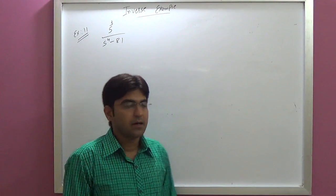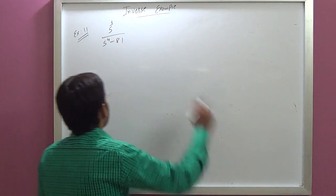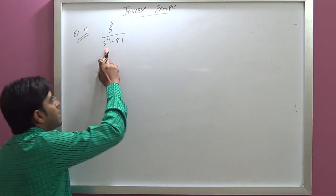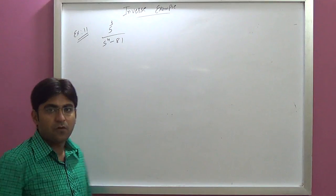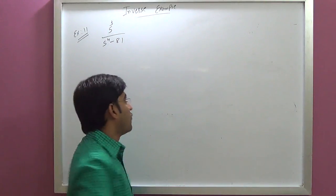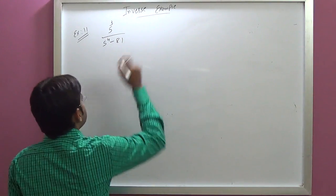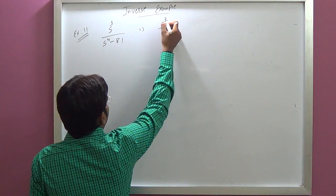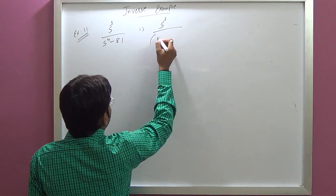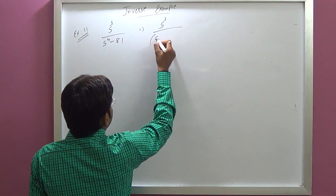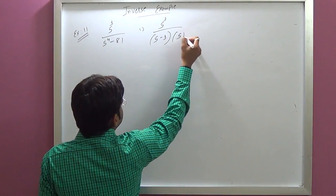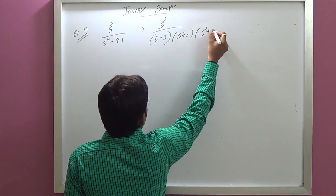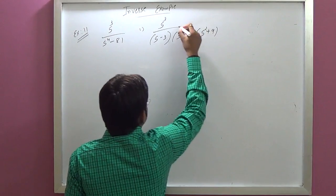Example 11: we have S cubed upon S raised to 4 minus 81. First, we recognize the denominator S⁴ - 81, which factors as S minus 3, S plus 3, and S squared plus 9.